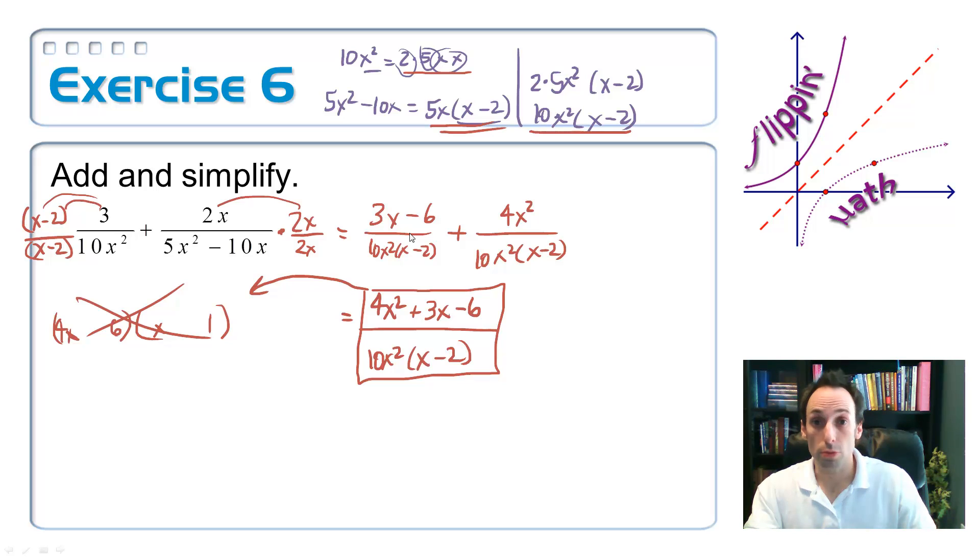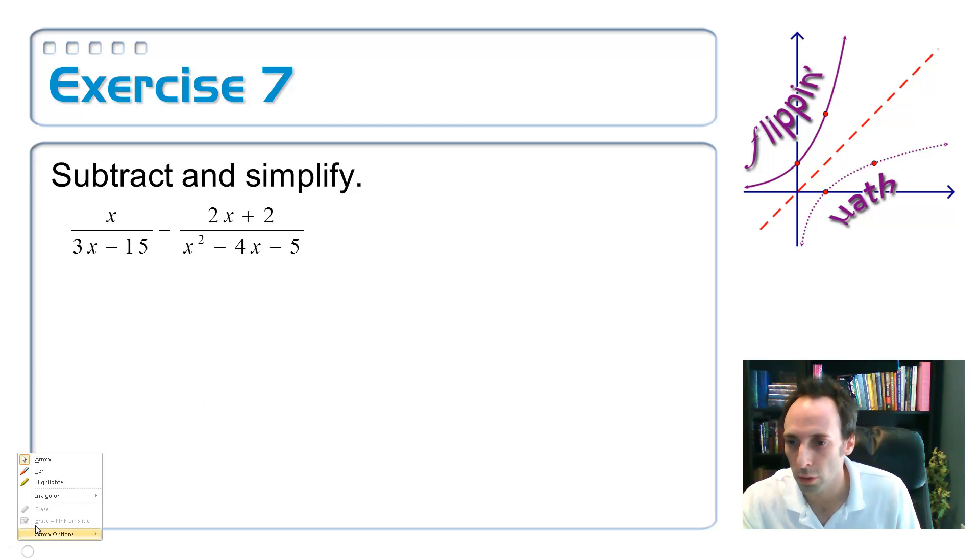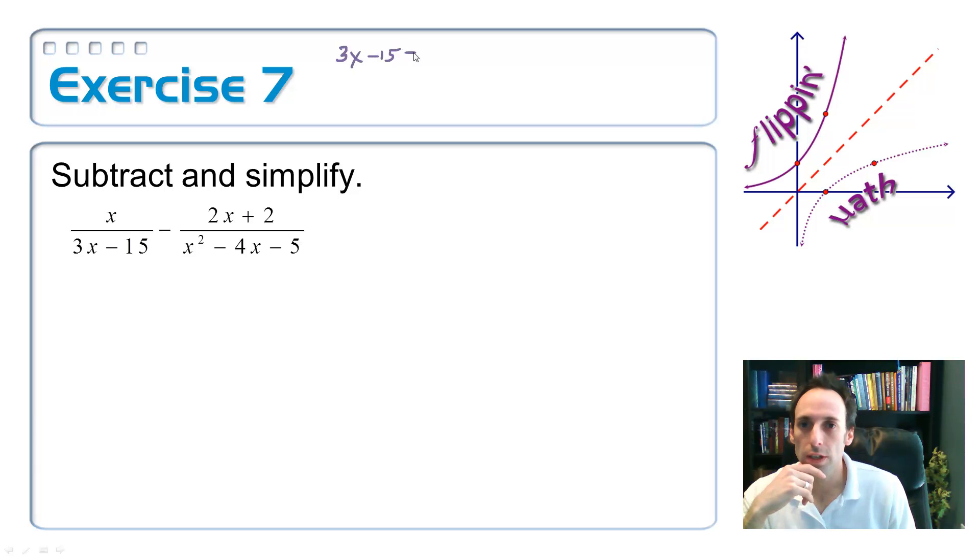All right. So, let's try a subtraction problem. Is it going to be much different? No. It's just I'm going to subtract the second part. I still need to get a common denominator. Let's switch back to purple. So, let's factor the first fraction. I got 3x minus 15, which factors as 3 times x minus 5. And the second one, I have x squared minus 4x minus 5. How is that going to factor? Probably x minus 5 times x plus 1.